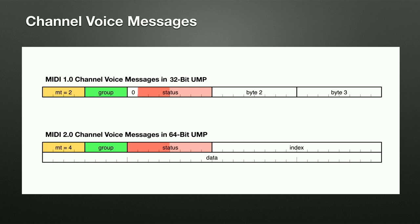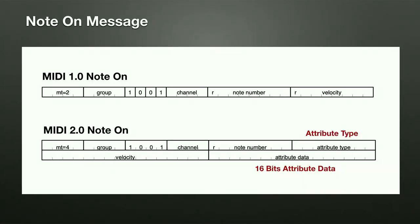Looking at actual channel voice messages: a MIDI 1.0 channel voice message in a 32-bit Universal MIDI Packet has the message type field, four bits of group, the status byte — with the first bit still zero just as in the byte stream — then the two data bytes. In MIDI 2.0 protocol that expands to a 16-bit index field and 32 bits of data.